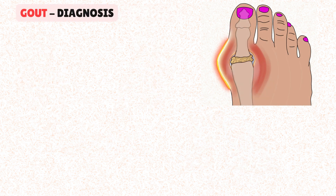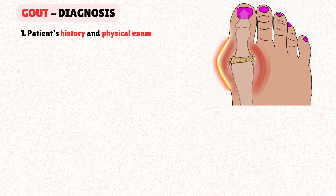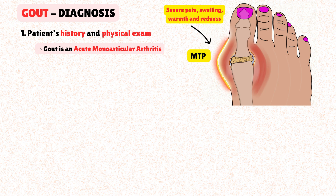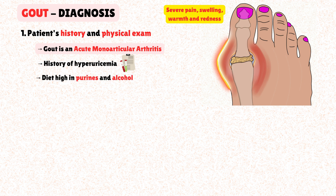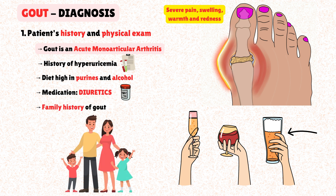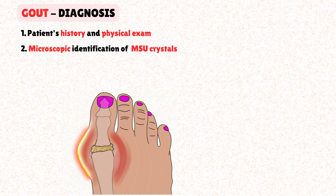Diagnosis often starts with a high level of clinical suspicion based on the patient's history and physical exam. A key feature of gout is acute monoarticular arthritis: the sudden onset of severe pain, swelling, warmth, and redness in a single joint, usually the first metatarsophalangeal. Risk factors include a history of hyperuricemia, a diet high in purines and alcohol — especially beer — diuretic use, or a family history of gout. For a definitive diagnosis, the gold standard is the microscopic identification of monosodium urate crystals in the synovial fluid of the affected joint.